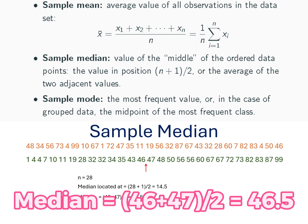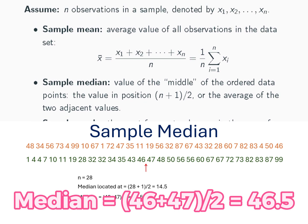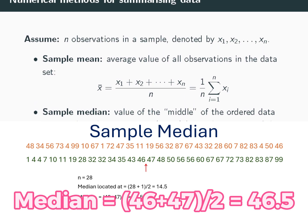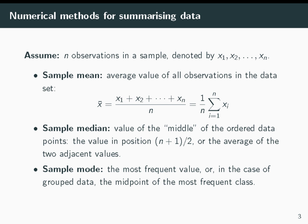If the dataset contains even number of elements, then the median is the average of two adjacent values that correspond to the median number found using n plus 1 divided by 2 in the ordered dataset.